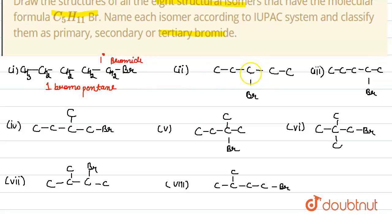Next is here bromine is attached to that carbon which is further attached to two carbons. That's why it is secondary bromide. And the name of this compound is 3-bromo-pentane.